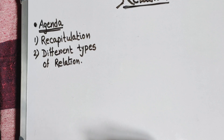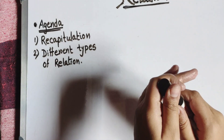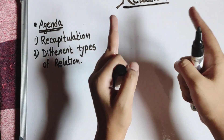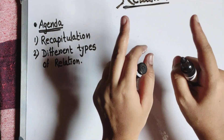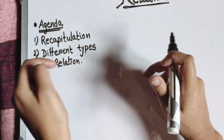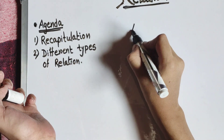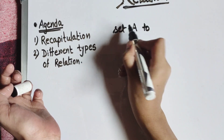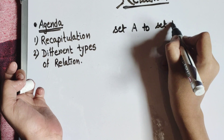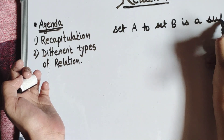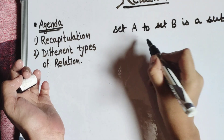In class 11 we introduced the notation of a relation — its domain, its co-domain, and its range. Let us recall that a relation from a set A to set B is a subset of A cross B.